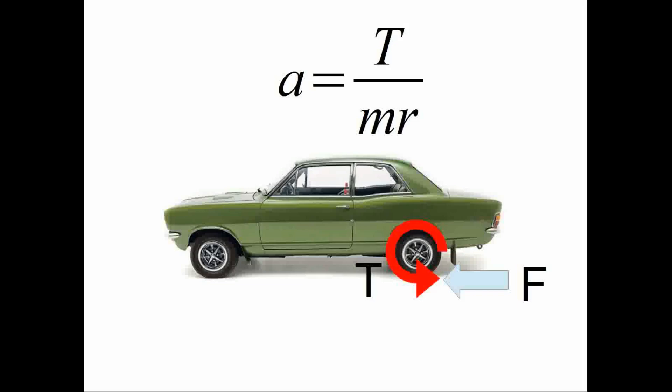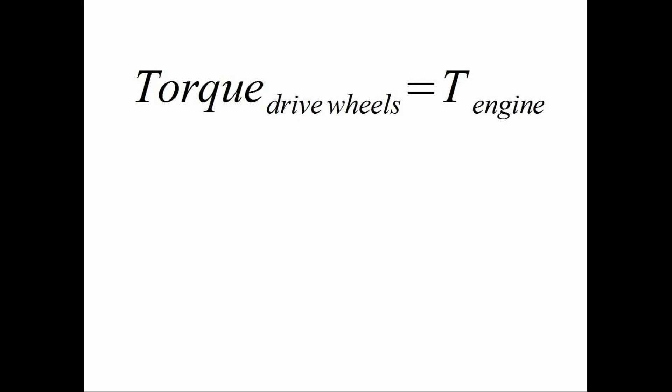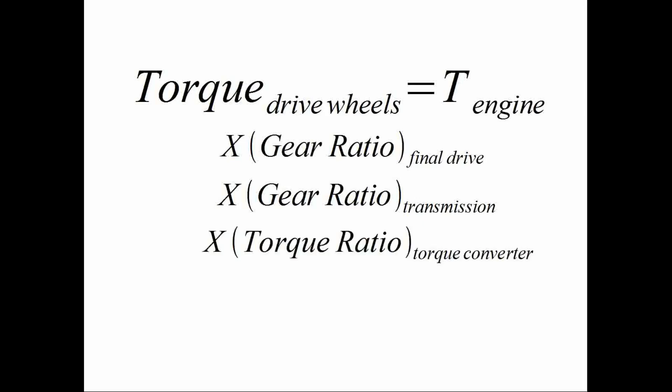Back on topic about determining optimum shift points. Oh, one other really important thing. We're really simplifying the math here for illustrative purposes. We're not including frictional losses, inertia effects, aerodynamics, etc. This is just the foundational physics. Now, let's go back to accelerating our vehicle. Torque at the drive wheels ultimately gives us our acceleration capability. The torque at the drive wheels is equal to the torque at the engine, times the gear ratio of the final drive, the rear gears, times the active gear ratio of the transmission, times torque ratio of the torque converter, if you have an automatic trans.